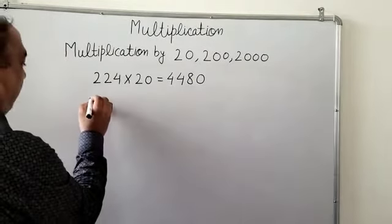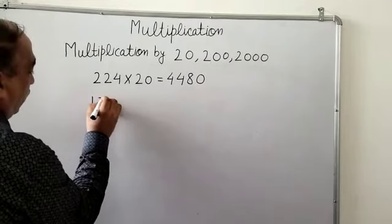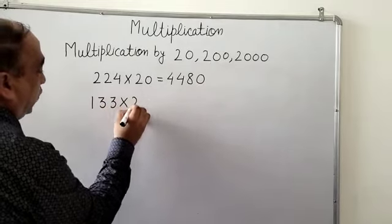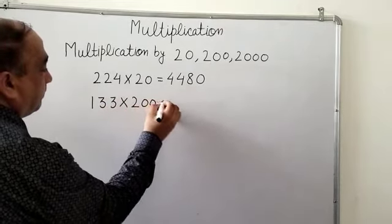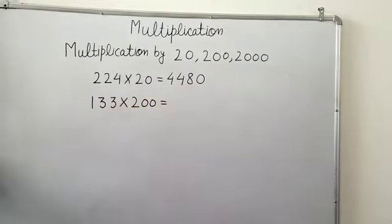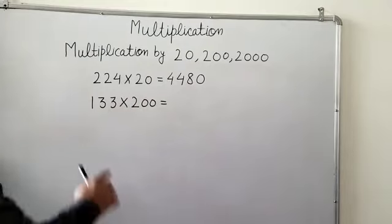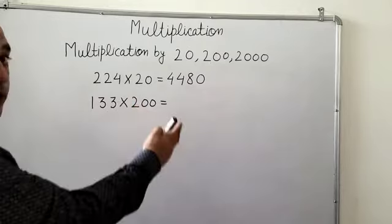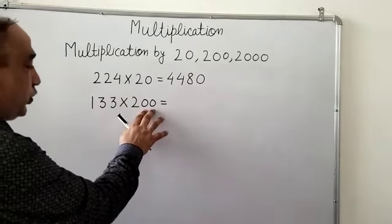I am taking one more example, 133 multiplied by 200. Again, we will multiply 133 by 2 instead of 200, leave these two 0s.